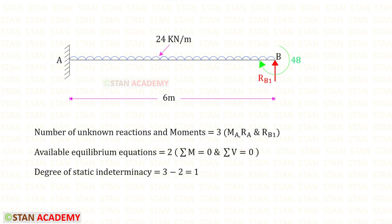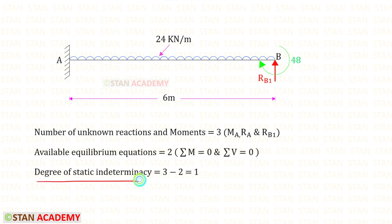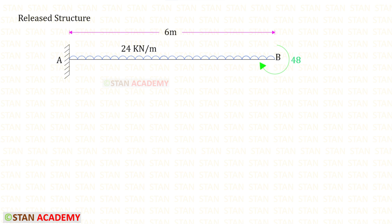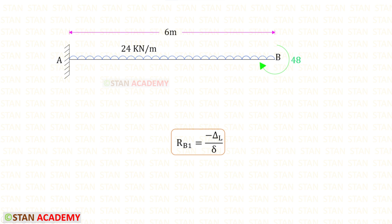Now let us find the degree of static indeterminacy. In this beam the number of unknown reactions and moments is 3, and the available equilibrium equations are 2, so the degree of static indeterminacy is 3 minus 2, which equals 1. From point B, let us release RB1 so point B becomes a free end. We know the formula to find RB1 as minus delta_L divided by delta, and we are going to use the unit load method to find both values.